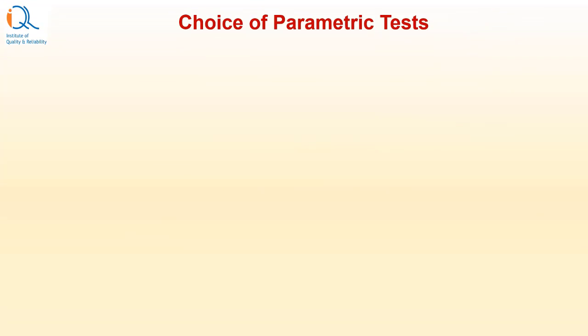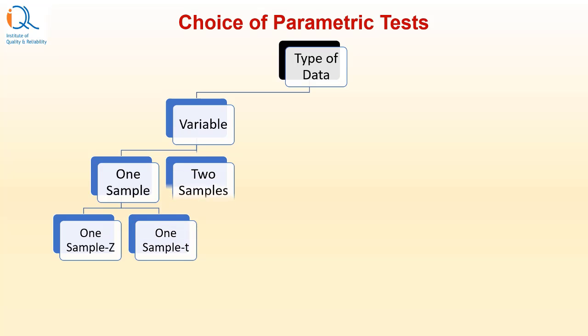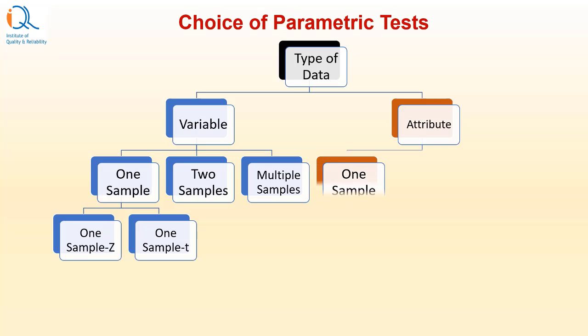In our video Hypothesis Test Part 1, we discussed choice of parametric tests. When the type of data is variable and there is only one sample, you can have one sample Z or one sample T, and you can also have two sample comparisons and multiple sample comparisons. Similar tests are available in attribute data.